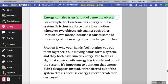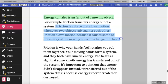Energy can also transfer out of a moving object. For example, friction transfers energy out of a system. Friction is a force that slows motion whenever two objects rub against each other. Friction slows motion because it causes some of the energy of the moving object to change into heat.